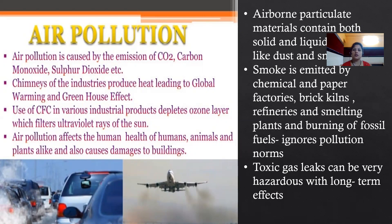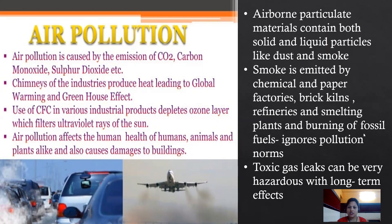Airborne particulate materials contain both solid and liquid particles like dust and smoke. Not only poisonous gases like carbon dioxide, carbon monoxide, and sulfur dioxide, but also dust and smoke from industries affect human health. Smoke is emitted by chemical and paper factories, brick kilns, refineries, smelting plants, and burning of fossil fuels that ignore pollution norms, releasing poisonous things into the air.